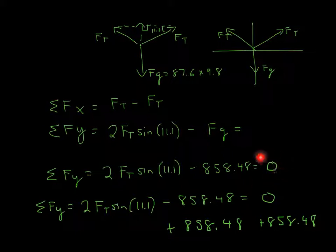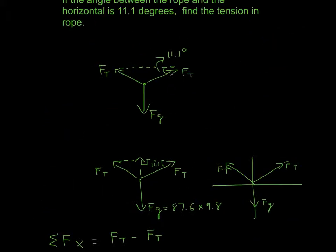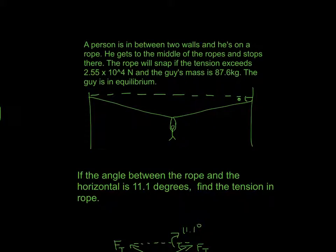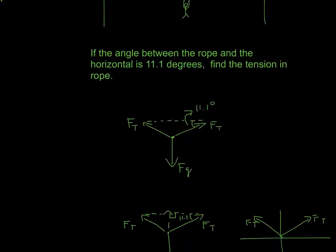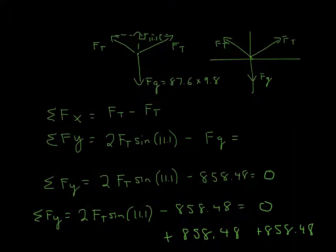And now the important thing is why I set it to zero. So if you go back into the problem, you'll see that the guy is in equilibrium. If he's in equilibrium, when you do force equals mass times acceleration, Newton's second law, the mass times acceleration part just becomes zero because he's not even moving.